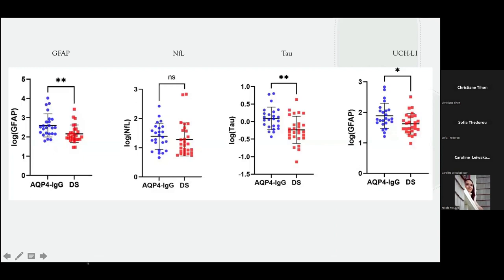We are performing a study on seronegative NMOSD, which is very important — we are trying to find antibodies and signals of immune activation. In some seronegative patients we found an immunological profile similar to aquaporin-4 seropositive cases. It's a field where we need to do more work, as it's crucial to understand what treatment to give these patients.